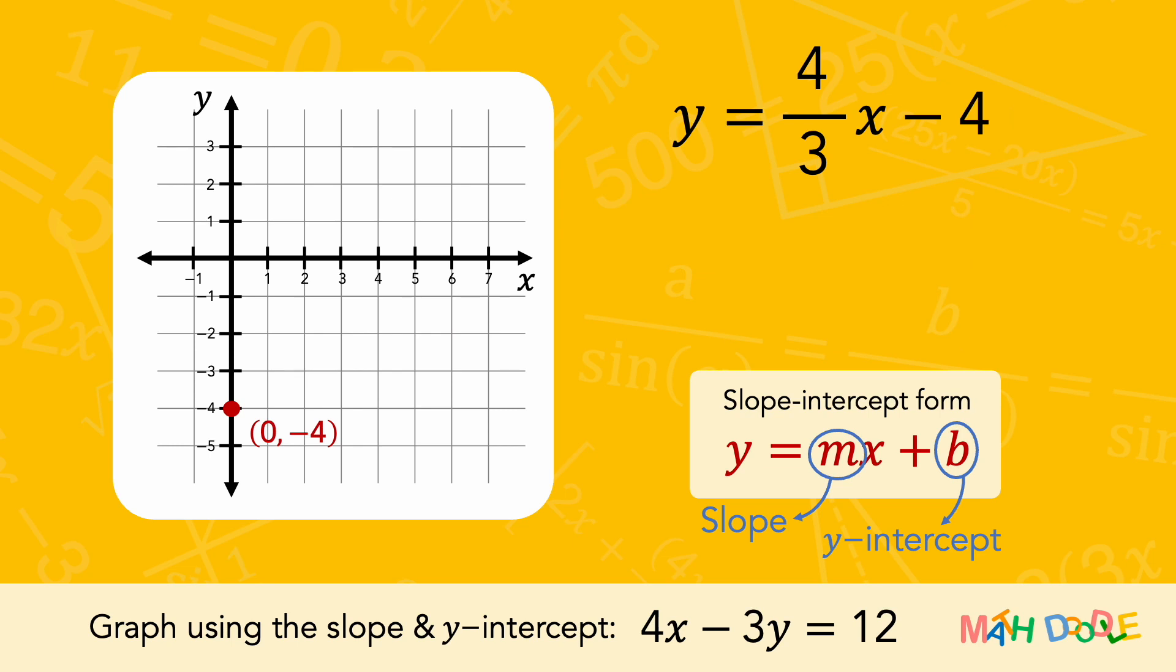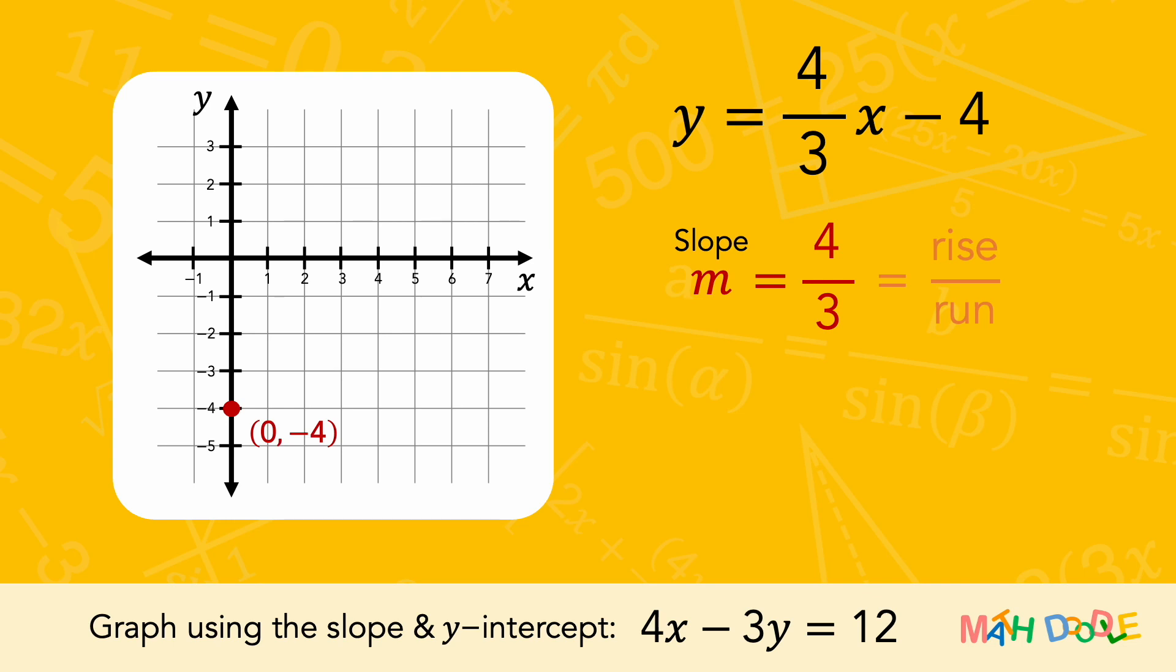Also, the equation has a slope of 4 thirds. Since the slope of a line is expressed as the ratio of the rise to the run, this tells us that the line of the equation has a rise of 4, and a run of 3.